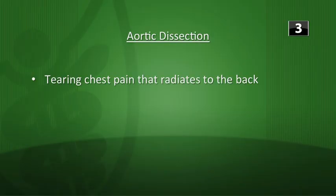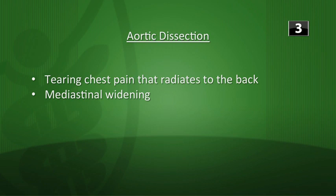The last warm-up question: what's the classic presentation of aortic dissection? You're going to have tearing chest pain that radiates through to the back. The chest X-ray finding to look for is widening of the mediastinum, and the preferred category of blood pressure medications for treatment is beta blockers.